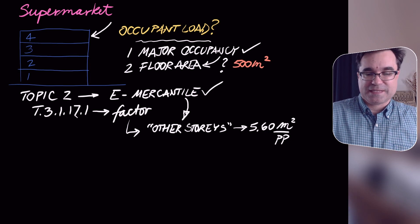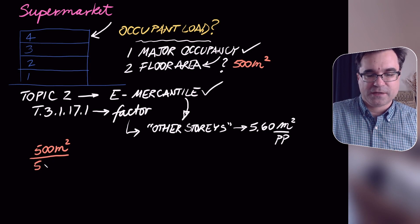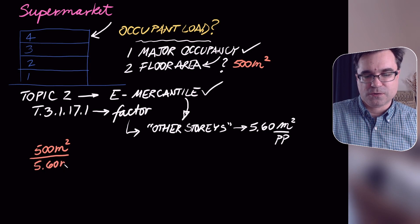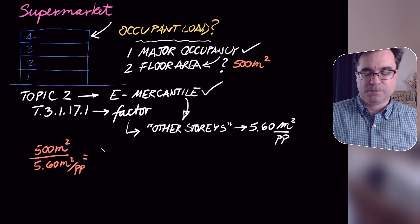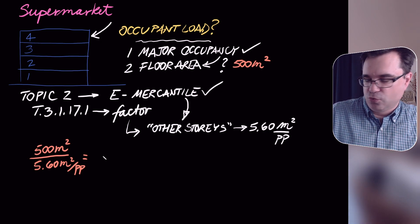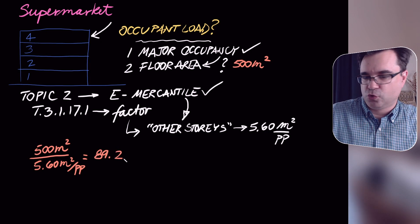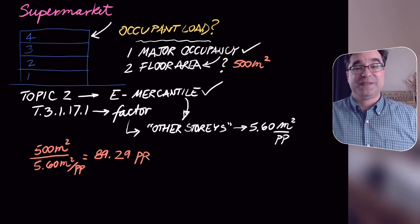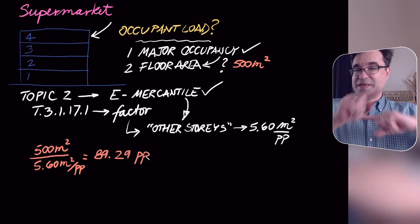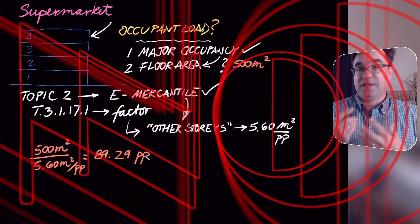We take the two values and divide them: 500 m² ÷ 5.60 m² per person = 89.29 people. But are we done? No — remember, people are whole numbers; human beings are whole numbers, so 89.29 is not a valid number of people.